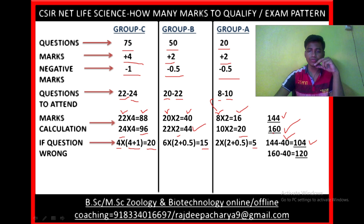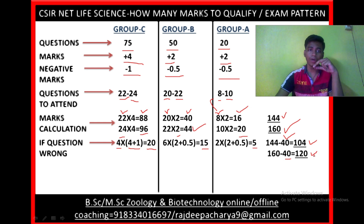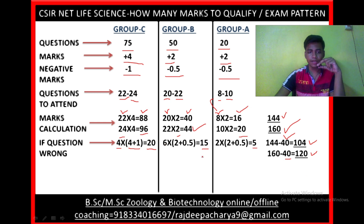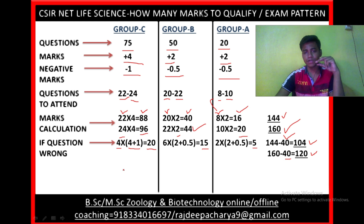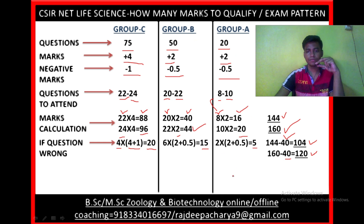In respect of the maximum score of 160, if you deduct 40 marks, you get 120. A score of 120 is also good enough to qualify CSIR Net Life Science, get JRF, and get a rank. So the maximum number of wrong answers you can afford is 4 from Group C, 6 from Group B, and 2 from Group A, to still achieve 104 or 120.